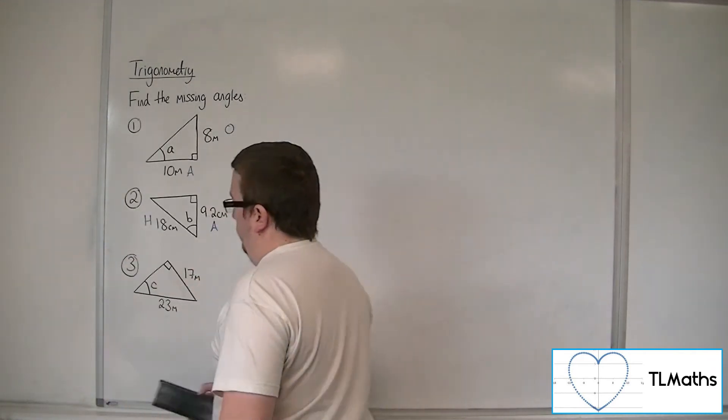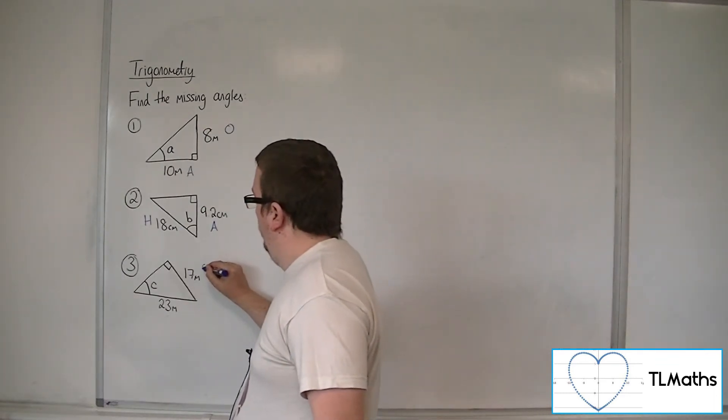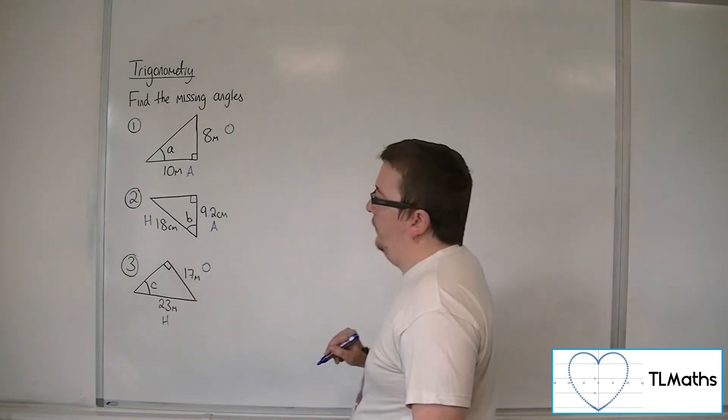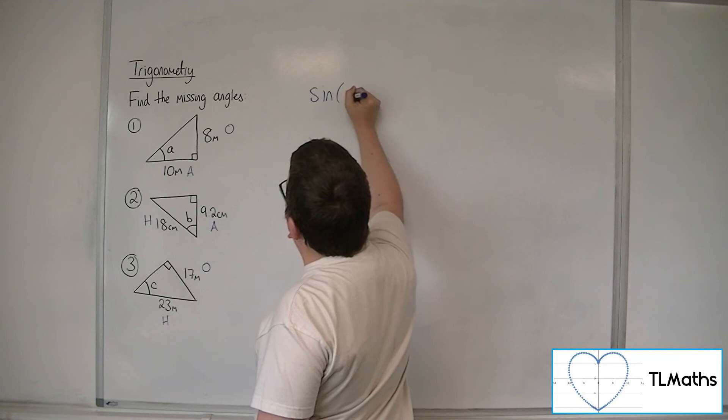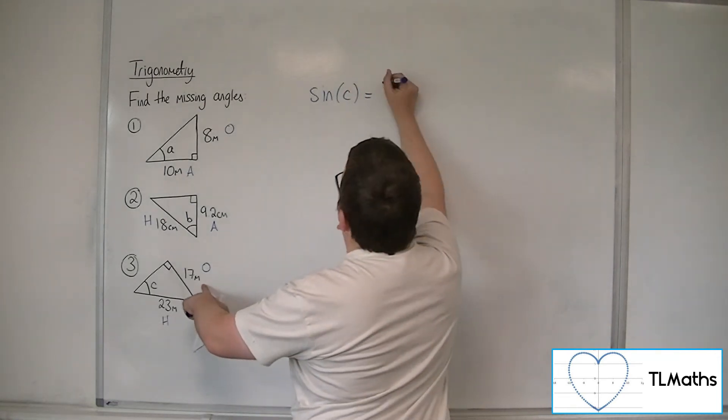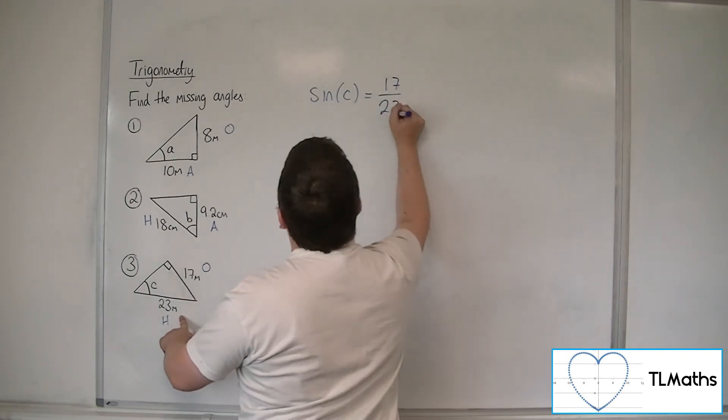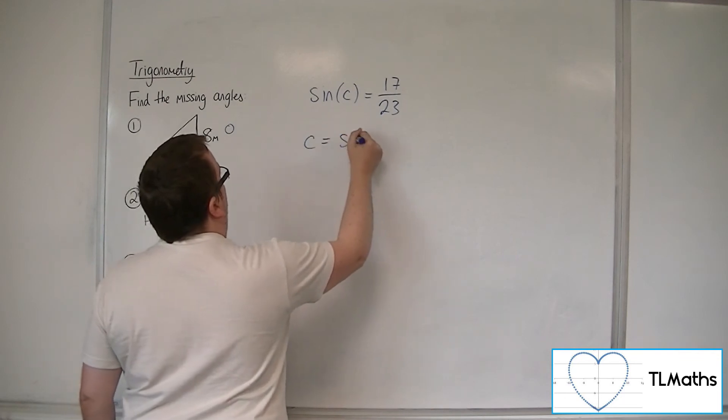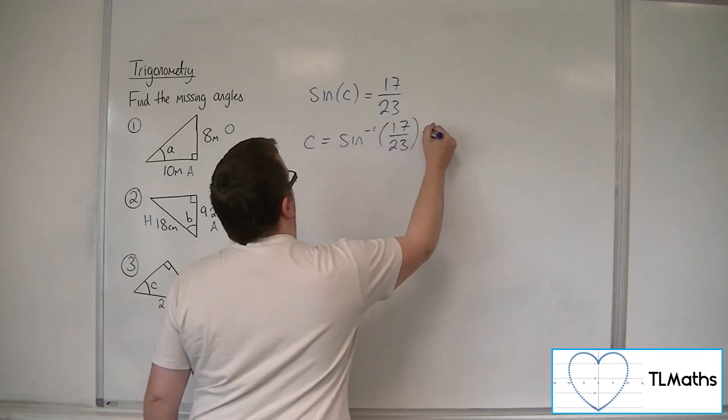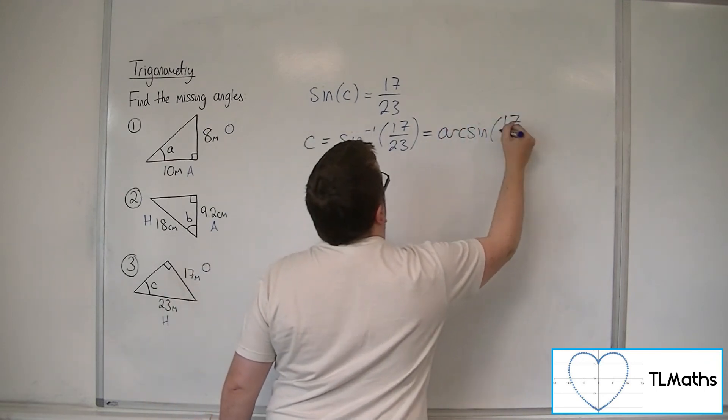So finally, number 3. So this will be my opposite side. This is my hypotenuse. So that means that sine of the missing angle C must be the ratio of the opposite over the hypotenuse. So C is equal to the inverse sine of 17 over 23, which is the same thing as arc sine of 17 over 23.